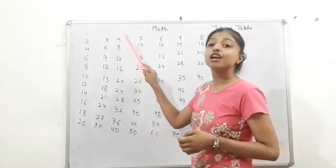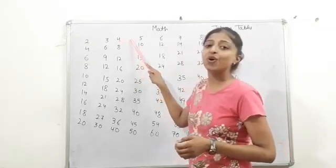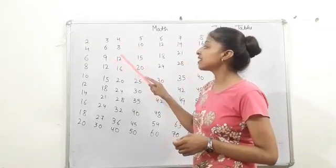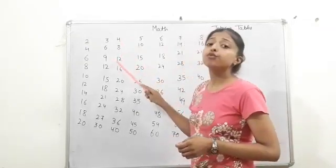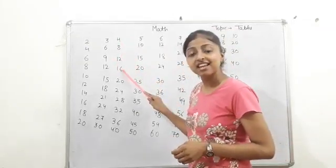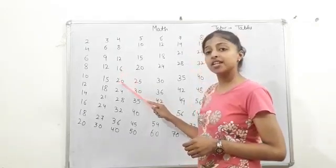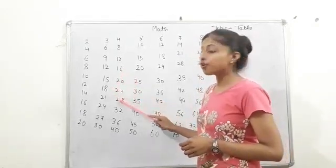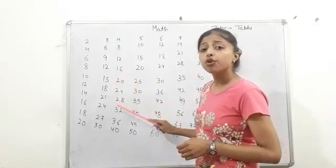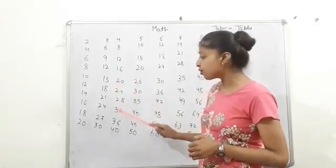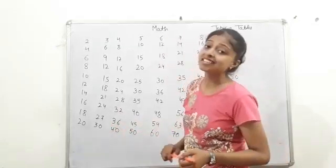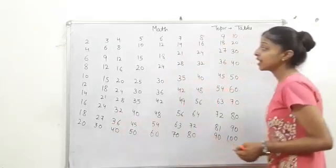Yes, do with me. 4 ones are 4, 4 twos are 8, 4 threes are 12, 4 fours are 16, 4 fives are 20, 4 sixes are 24, 4 sevens are 28, 4 eights are 32, 4 nines are 36, 4 tens are 40.